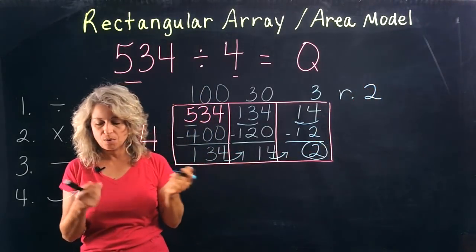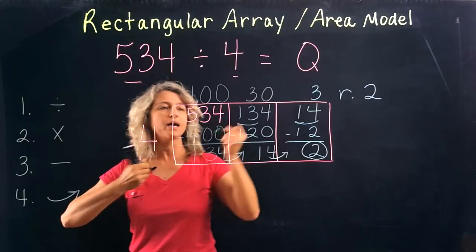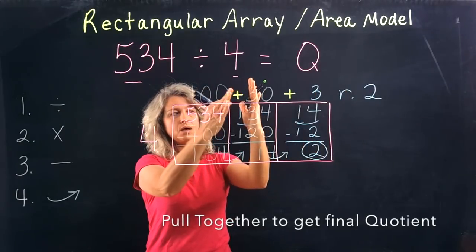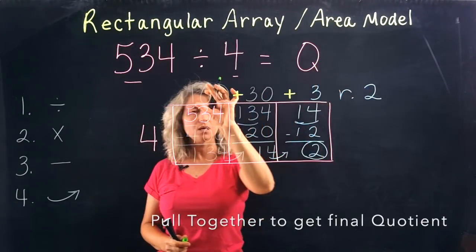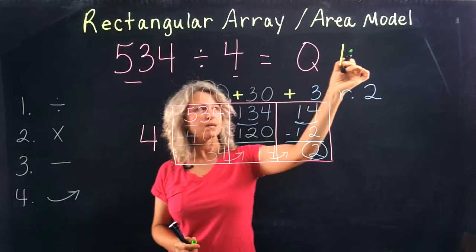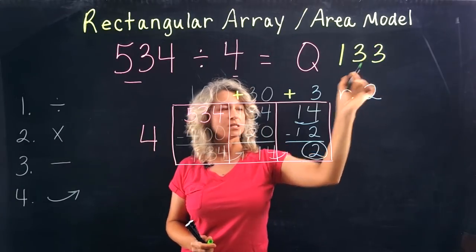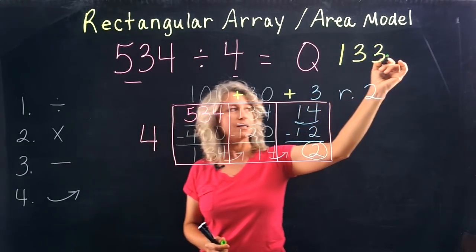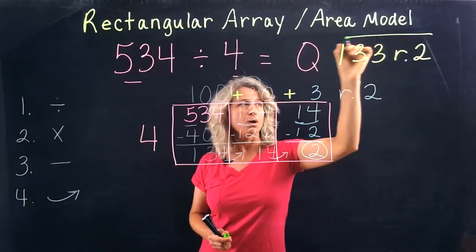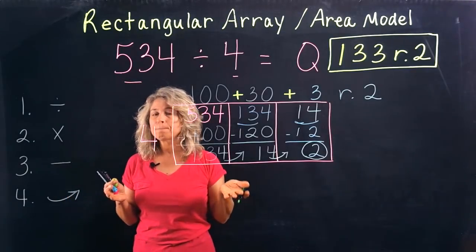When you finish your division problem and your last number is smaller than the divisor, you know you're finished because this must be the remainder. Now this is the fun part — this is the part my students love! Pulling it all together is like an expanded form problem. We have a 1 in the hundreds place, a 3 in the tens digit, and a 3 in the ones place. Don't forget to add your remainder. Your final quotient is 133 with a remainder of 2.